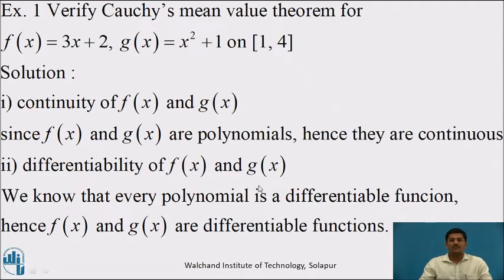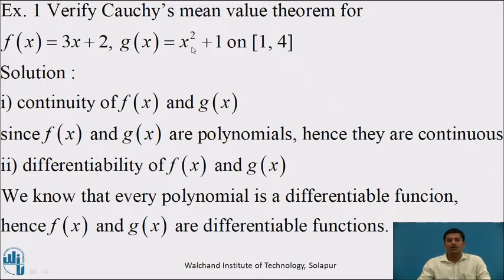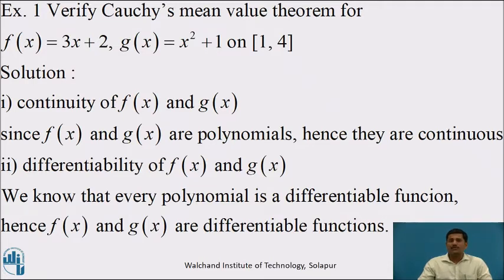Let us consider some examples. Verify Cauchy's mean value theorem for f(x) = 3x + 2 and g(x) = x² + 1 on the closed interval [1, 4]. Solution: let us verify first the continuity of f(x) and g(x). We can see that f(x) and g(x) are polynomials, and polynomials are always continuous functions on the set of real numbers. Therefore, these two functions are continuous on the closed interval [1, 4].